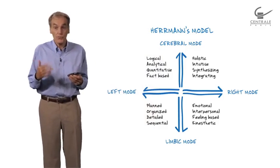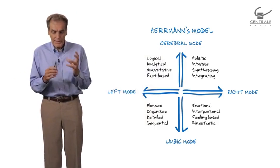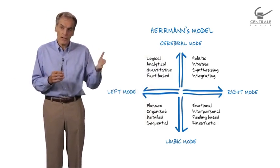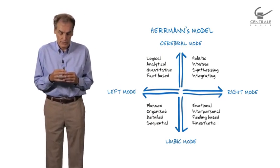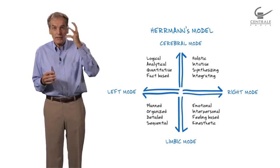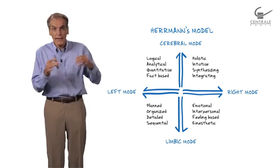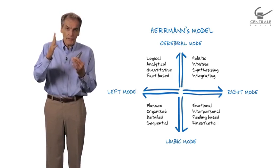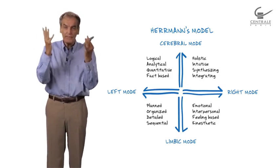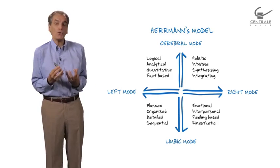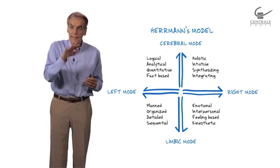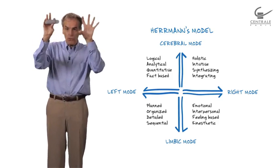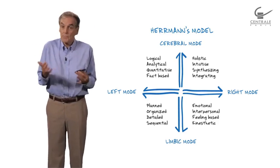What's funny with models is you can combine them. Look at the next one - it was proposed by Hermann. Hermann combined the left brain/right brain organization, you can see on the picture. He combined it with another way to model the brain: you can split rationality and reasoning on one hand, and emotions on the other hand. When you combine again with the matrix, you have four quadrants. It was proposed by Hermann as a model of the brain.